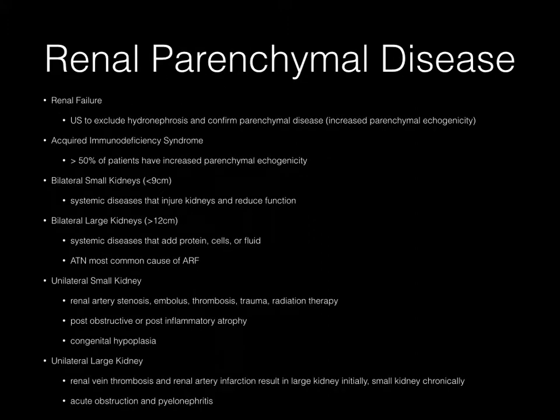Regarding renal parenchymal disease, in renal failure, ultrasound is utilized to exclude reversible obstructive uropathy and to confirm parenchymal disease, which appears as increased parenchymal echogenicity. In AIDS, greater than 50% of patients have increased parenchymal echogenicity. When you see bilateral small kidneys, think systemic disease that injures the kidneys. When you see bilateral large kidneys, think systemic diseases that add protein, cells, or fluid. A unilateral small kidney can be caused by renal artery stenosis, embolus, thrombosis, trauma, and radiation therapy.